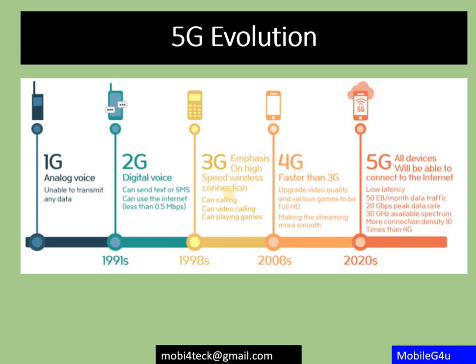If you see this evolution, we have 1G, 2G, 3G, 4G, 5G — this is our fifth generation. One thing that is common is that every 10 years we have one new technology. Around 1980 we had 1G, then 2G in 1991, around 1998 to 2000 we had 3G, and the first commercial 4G deployment was around 2010.